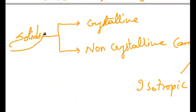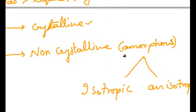Now coming to solids. Solids can be broadly classified into two types: crystalline solids and non-crystalline solids or amorphous solids.